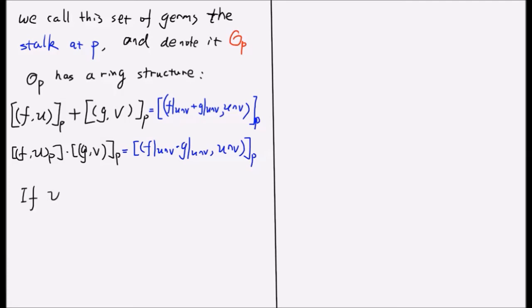If the open subset U contains the point p, then we have a map from the ring of functions on open subset U to the stalk at p, given by sending a function to the equivalence class [f,U]. From here, we can see a way of interpretation of a stalk as a colimit.